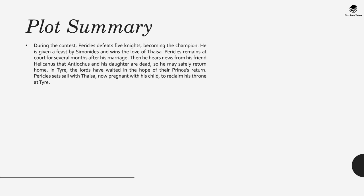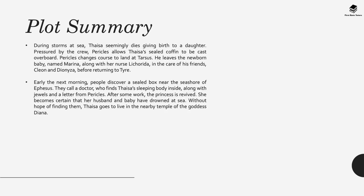In Tyre, the lords have waited in hope of the prince's return. Pericles sets sail with Thaisa, now pregnant, to reclaim his throne. During storms at sea, Thaisa seemingly dies giving birth to a daughter. Pressured by the crew, Pericles allows Thaisa's sealed coffin to be cast overboard. He changes course to land at Tarsus, where he leaves the newborn — named Marina — along with her nurse Lycorida, in the care of Cleon and Dionysa, before returning to Tyre.